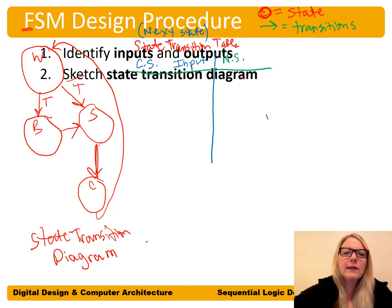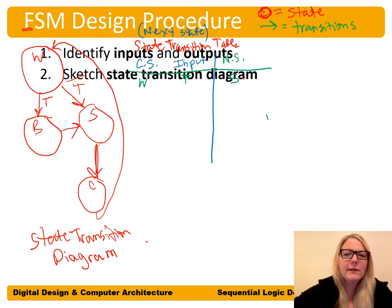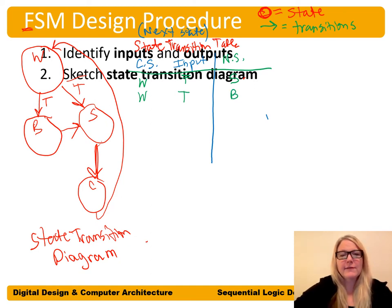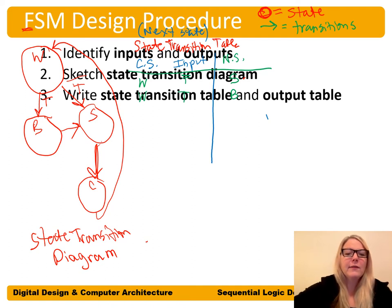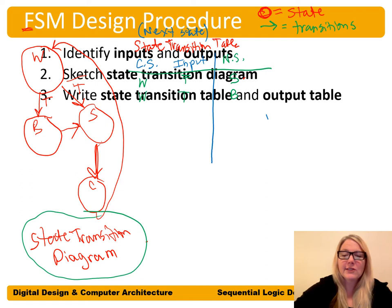Starting with the wake-up state: if input T is low (no time), the next state should be the shower state. If you're in the wake-up state and you do have time (T is high), the next state should be the breakfast state. We're just taking the state transition diagram and turning it into a table — the state transition table, also called the next state table.